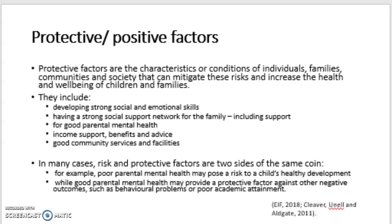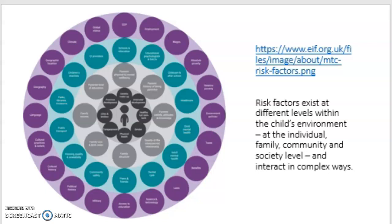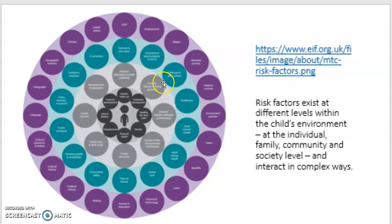This diagram is a really good model. I've provided the link so you can zoom in. It's an adaptation of the Bronfenbrenner model and goes into really nice detail about all those different layers that influence a child or individual's well-being. It also highlights the risk factors at different levels — crossing the individual, family, community and societal levels. The societal level is shown in purple, community in green, and the individual and family in dark and light grey.